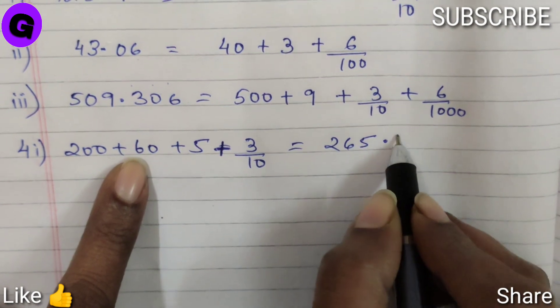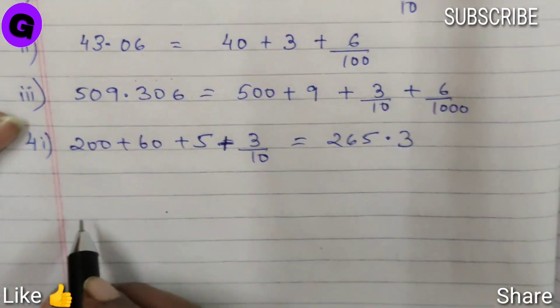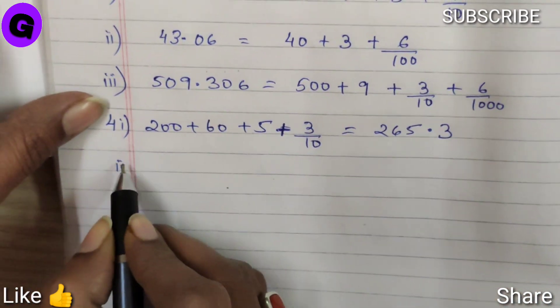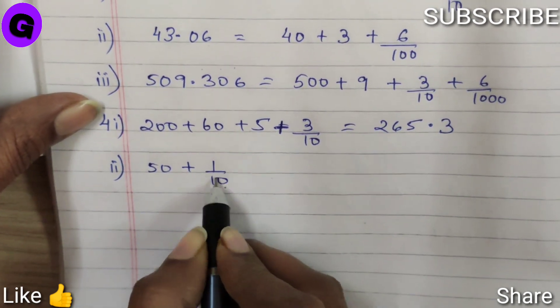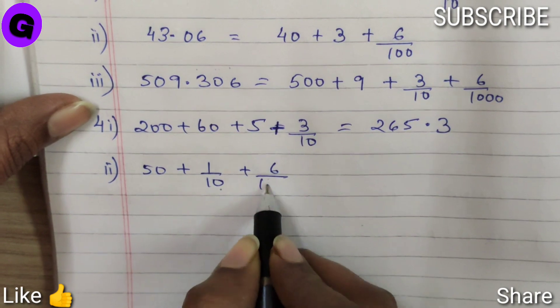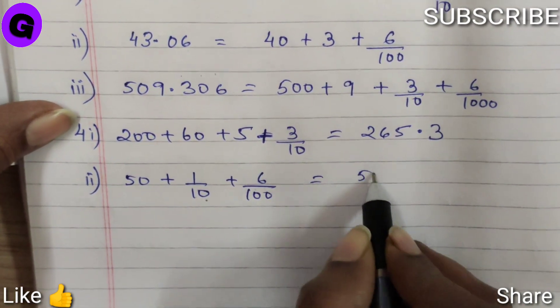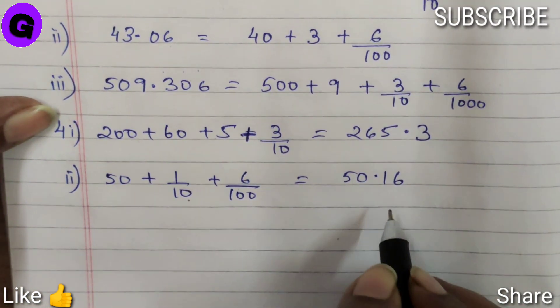265.3. Next question, subpart 2, 50 plus 1 by 10 plus 6 by 100. That comes down to 50.16.